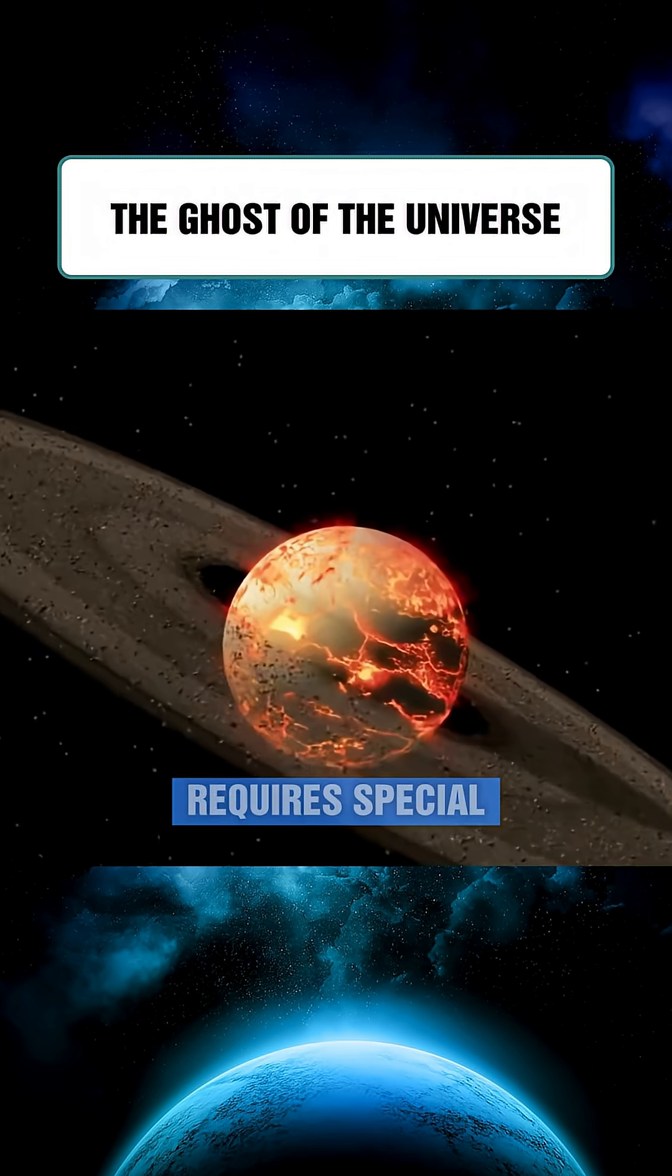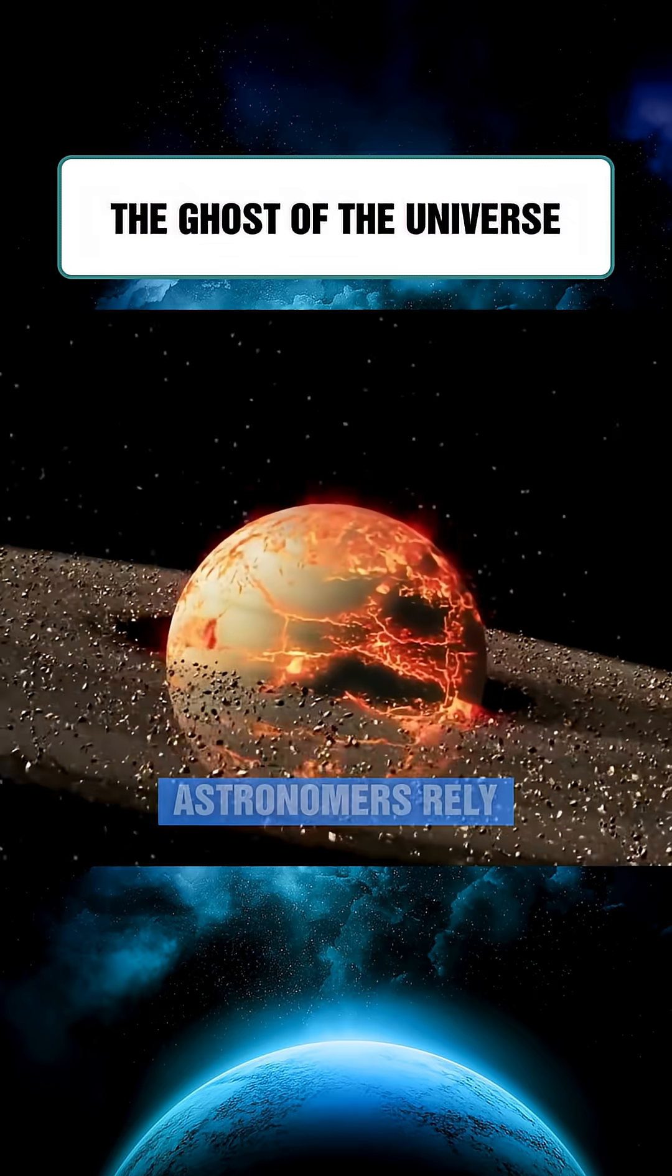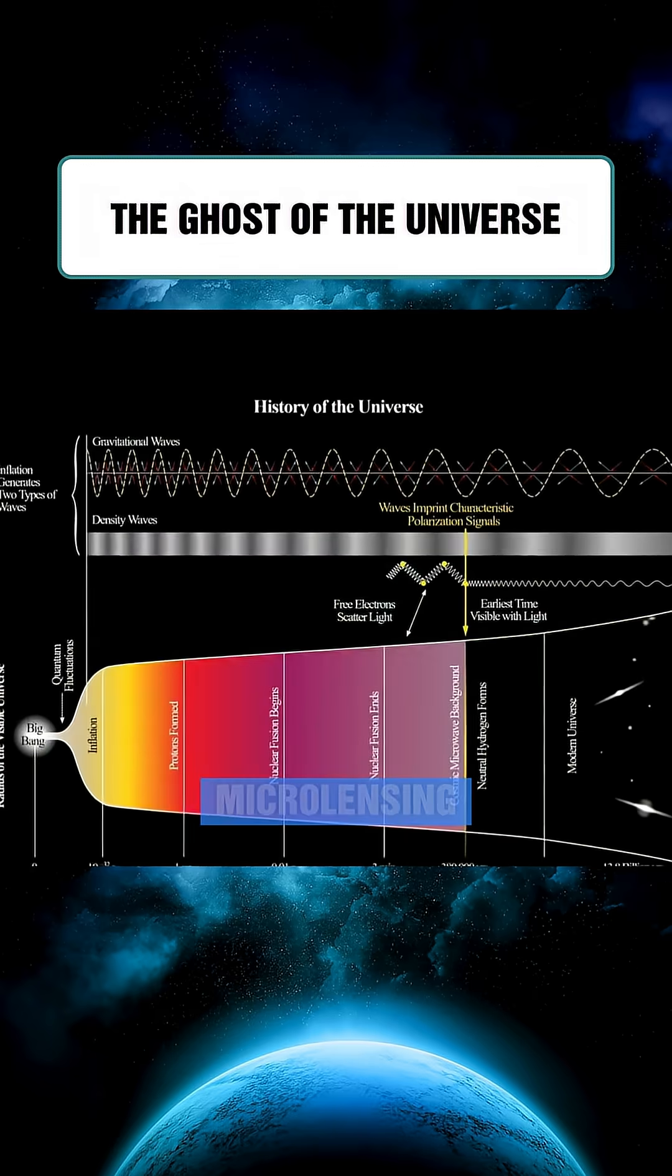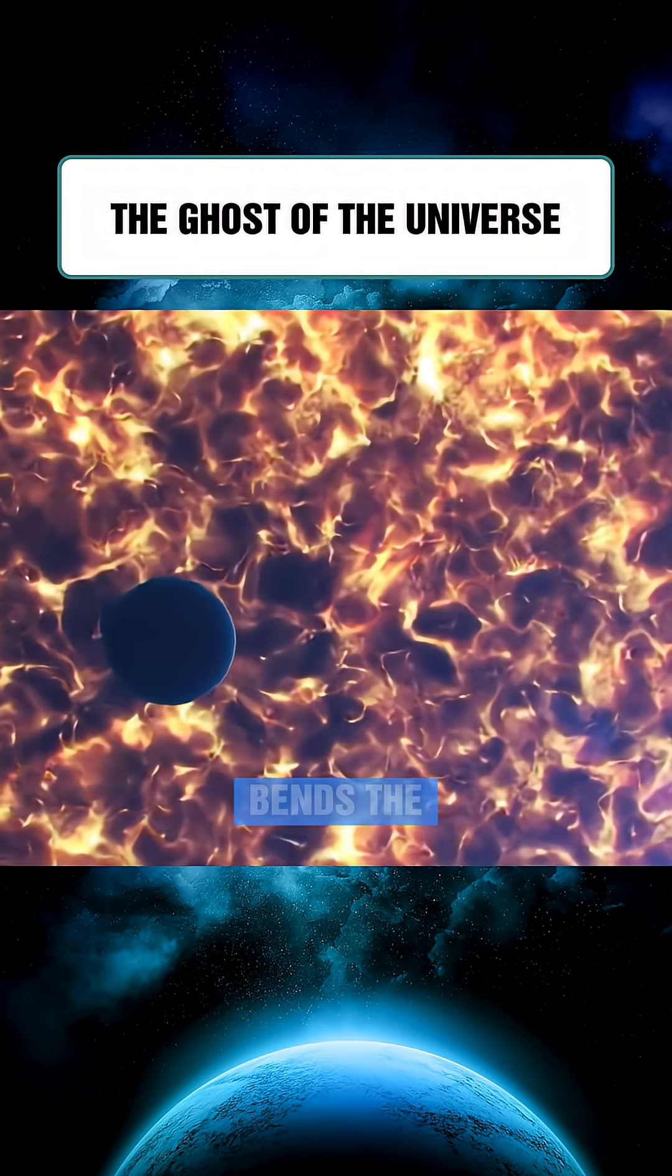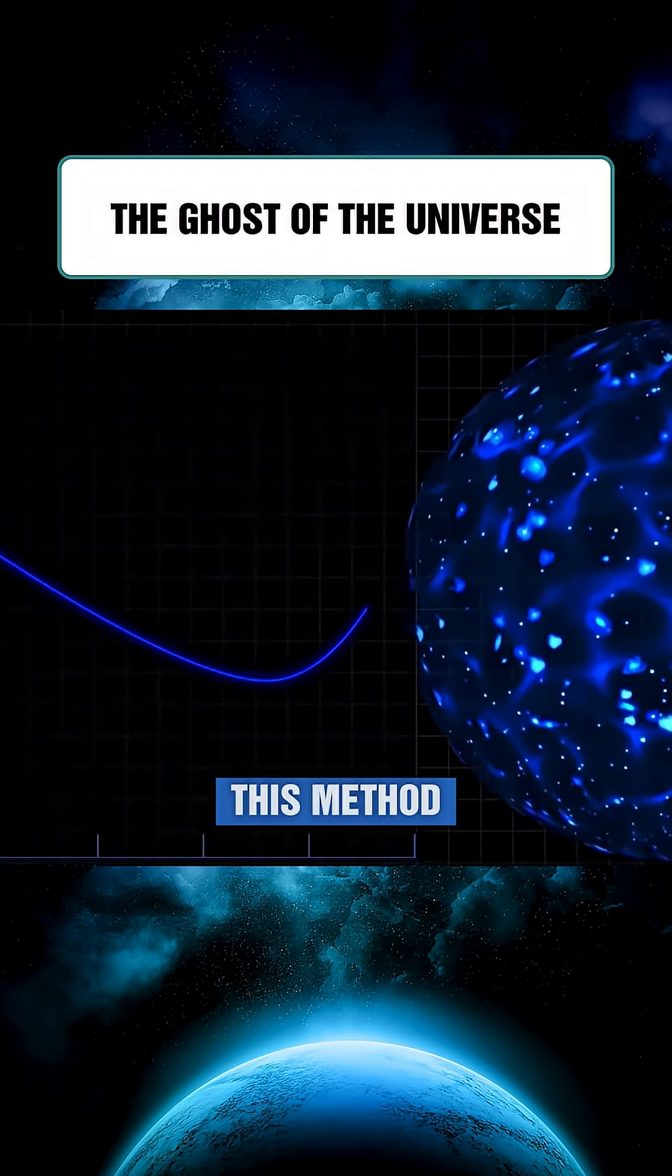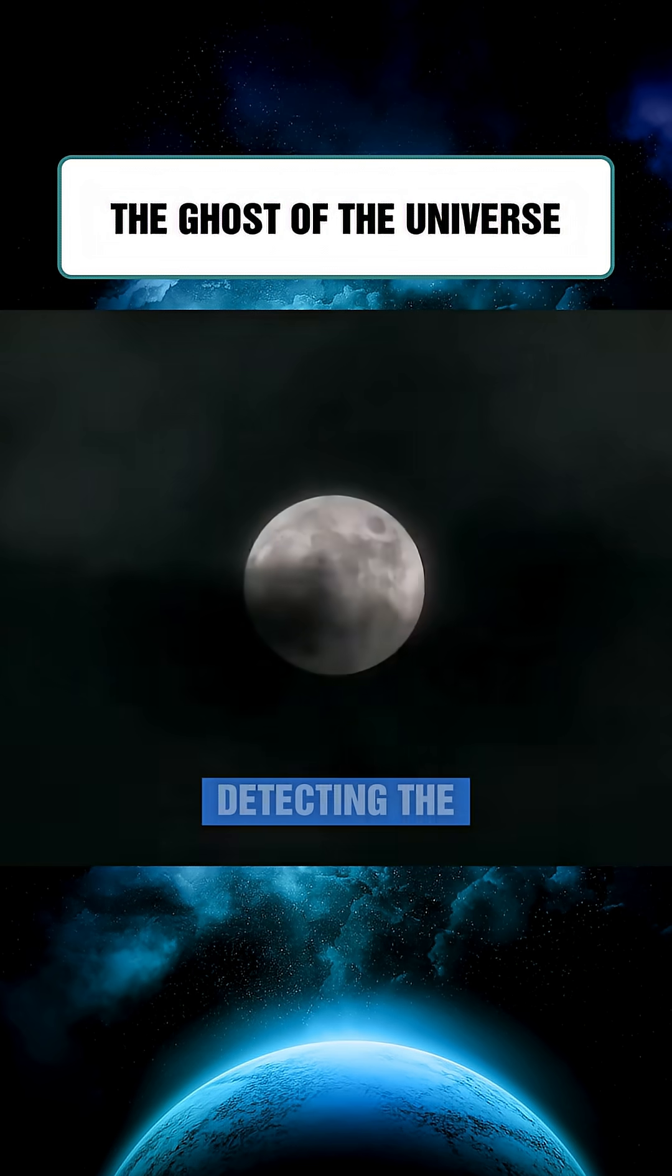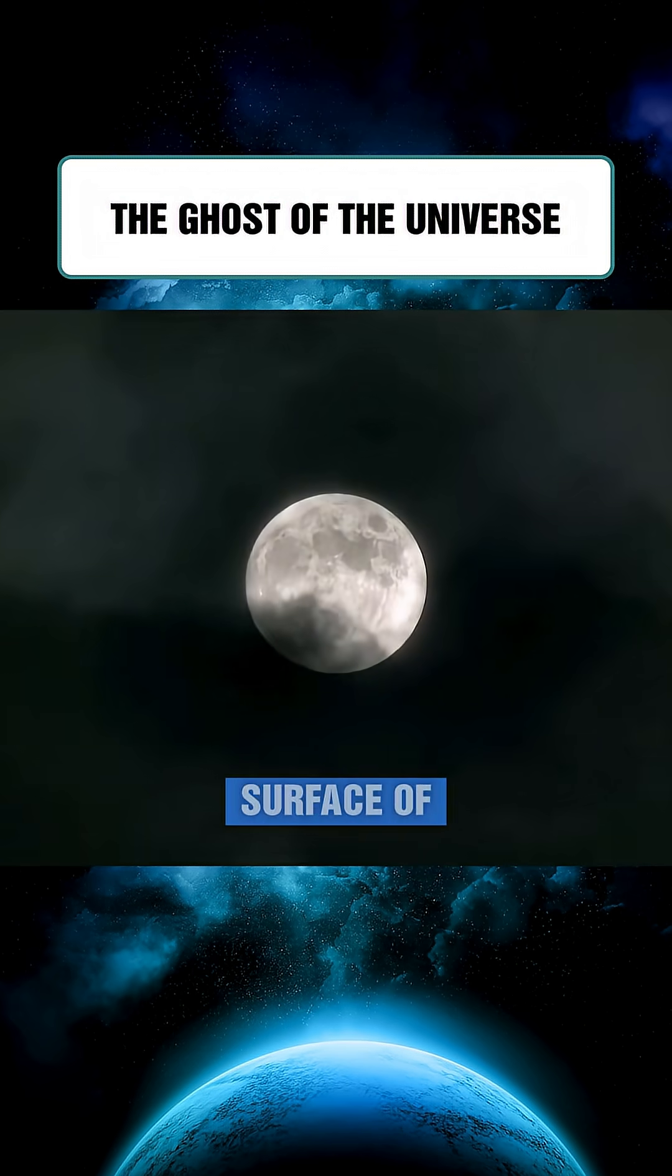Detecting these invisible threats requires special techniques. Astronomers rely on gravitational microlensing. When a rogue planet passes in front of a background star, its gravity subtly bends the starlight. This method is so precise, it's like detecting the thickness of a coin from the surface of the moon.